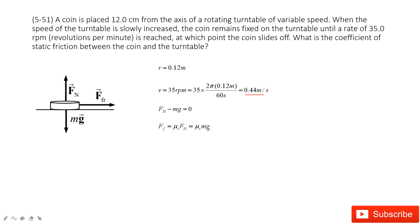So it's μs times mg. The next one is the friction equals the mass times the centripetal acceleration.